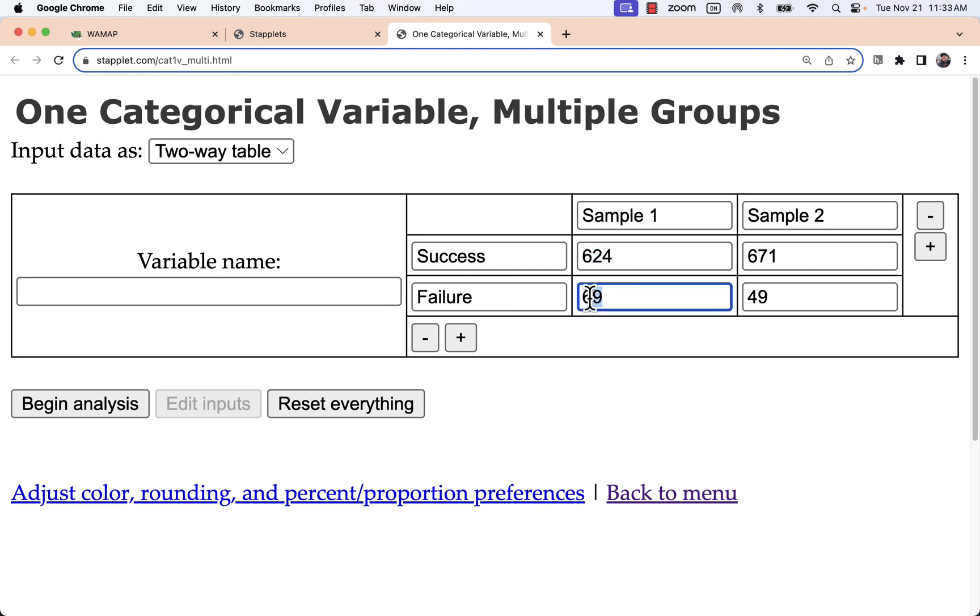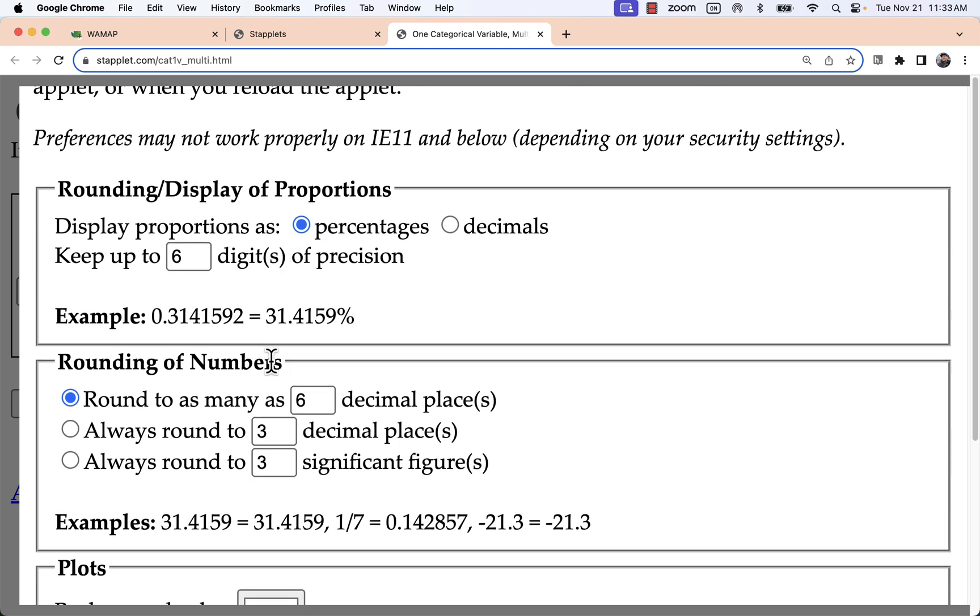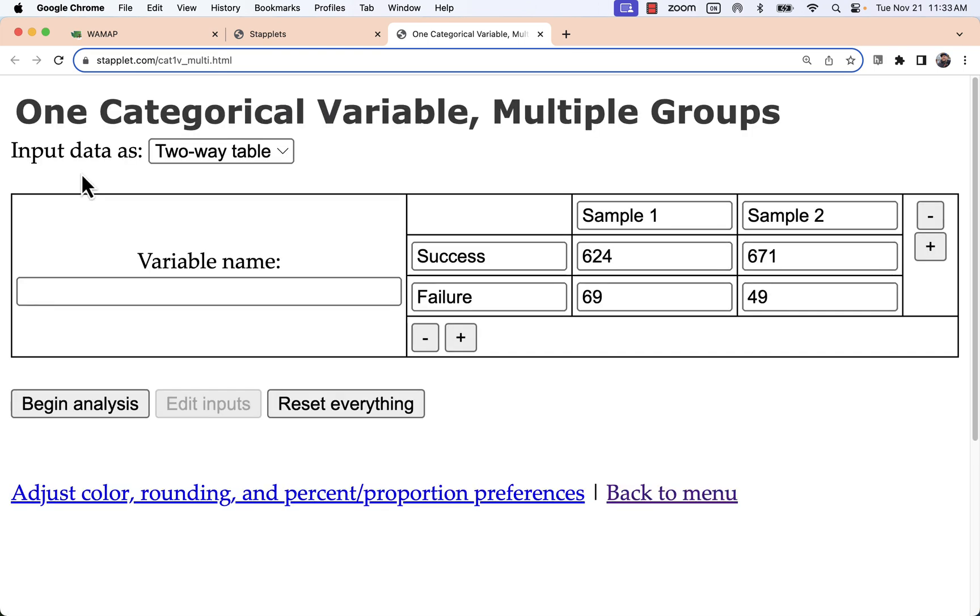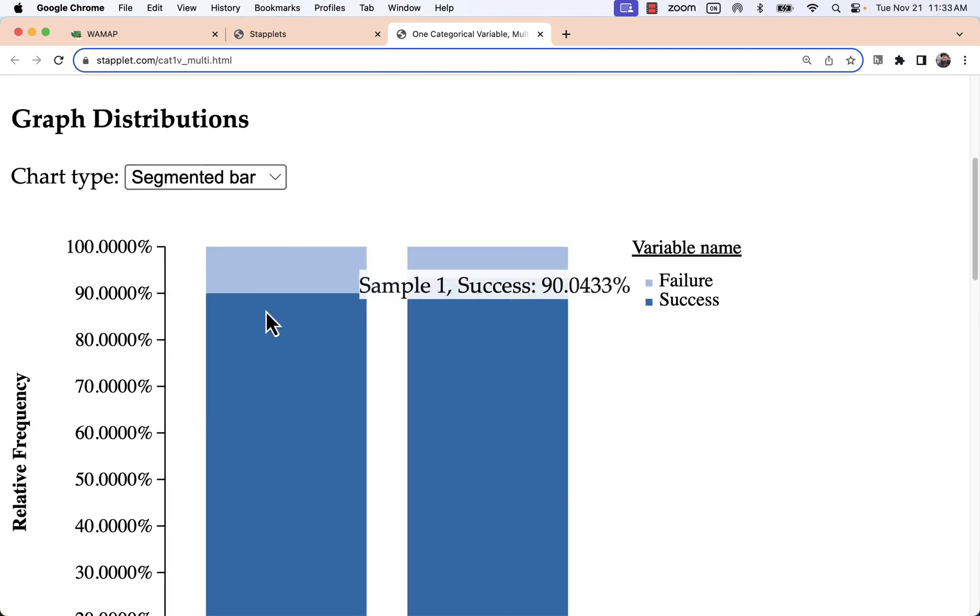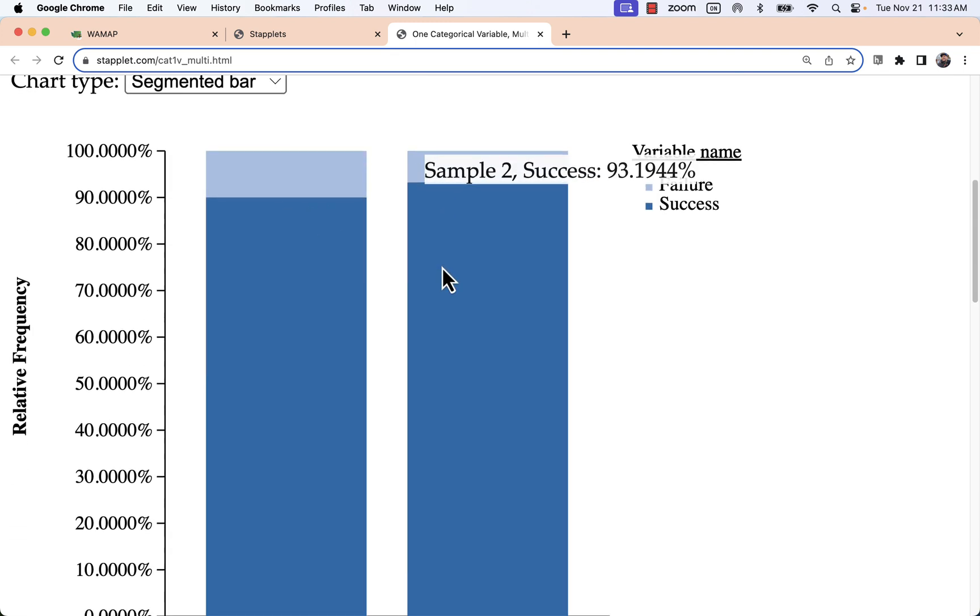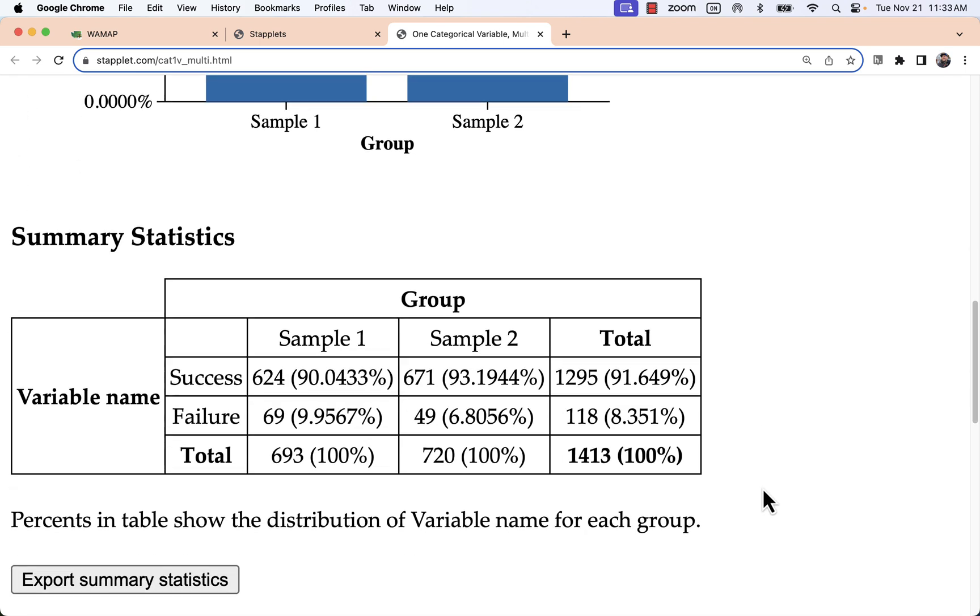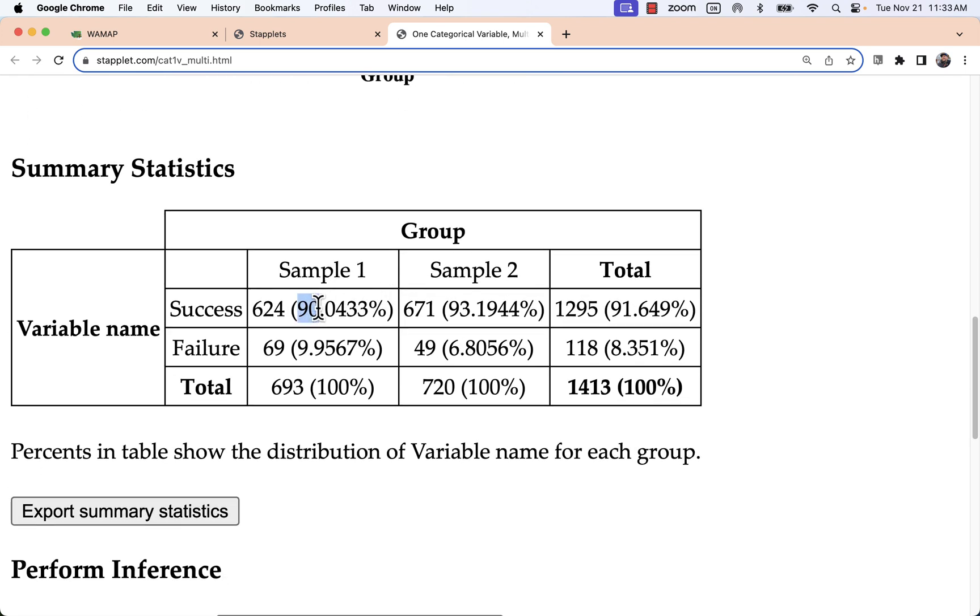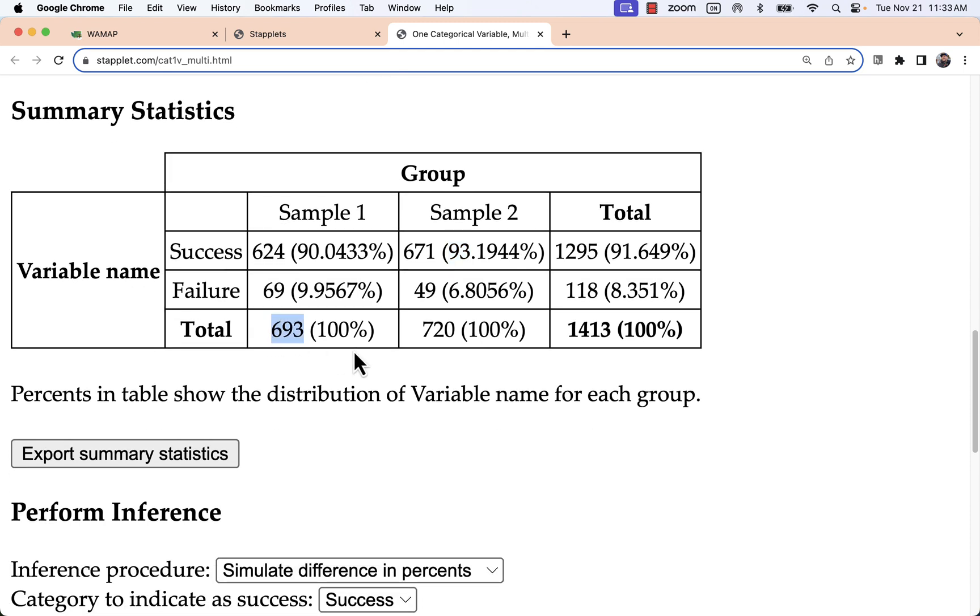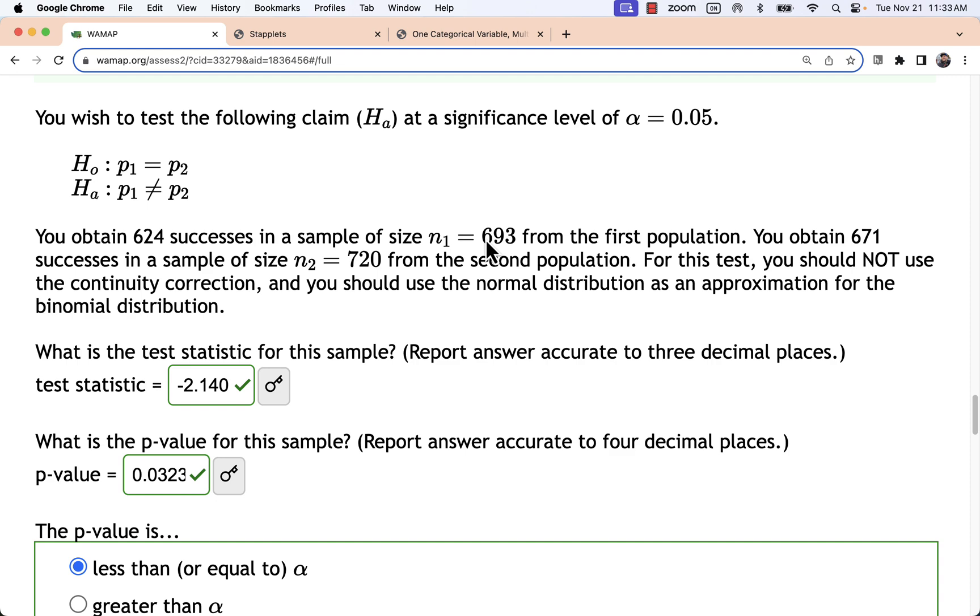I subtract from n to find the failures for each group, and I actually changed this to percentages on this problem. So I can look at my two groups here and they're pretty close to the same percent. If you really step back and look at it, I see it's about a 90 percent success rate versus a 93 percent success rate. And I should get those same number of sample size, that n. So 693 and 720. That's a really good check when you go back here to make sure that you did subtract correctly.